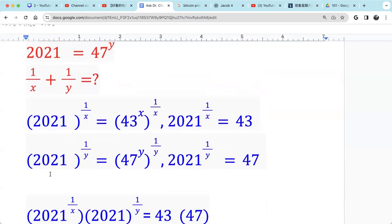So first step, we raise both sides of the two given equations by 1 over x for the first one and 1 over y for the second one. By doing so, we get 43 equals 2021 raised to 1 over x and 47 equals 2021 raised to 1 over y.